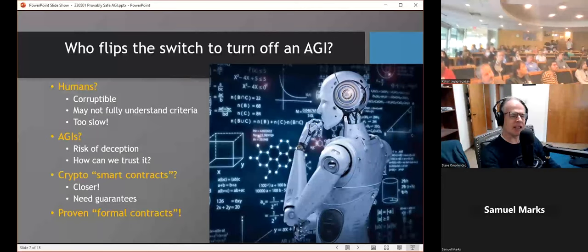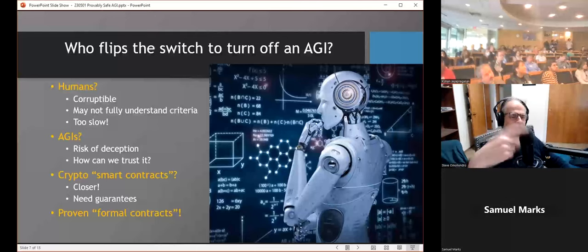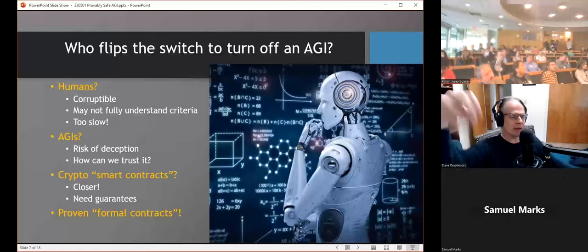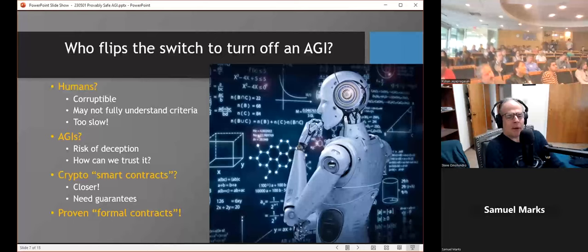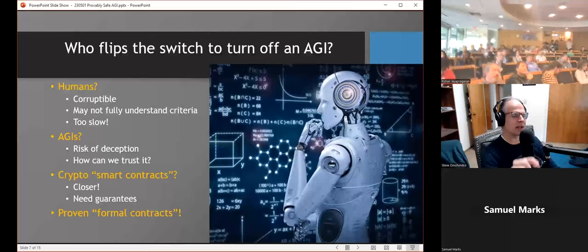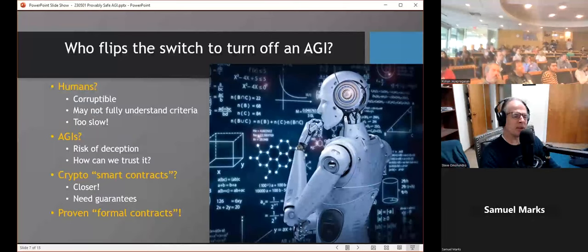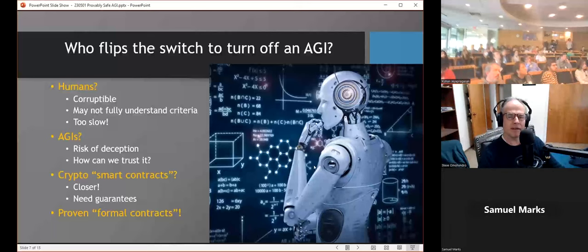But we need guarantees that these smart contracts are doing what we want them to do. In fact, in the blockchain world, in Ethereum, there have been many millions of dollars lost due to little flaws in the logic of a smart contract. Somebody didn't think of a certain case and an attacker exploits those vulnerabilities. So I think what we really need is something you might call formal contracts, which are smart contracts, little programs that are guaranteed to run the way they say, but with proofs that those little programs obey the kind of constitutional rules that we want that guarantee safety. So how do we do that? What's the technology for that?